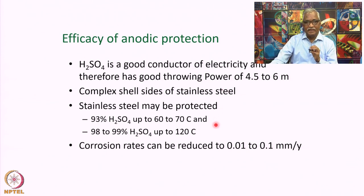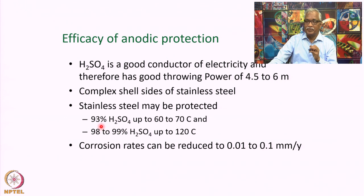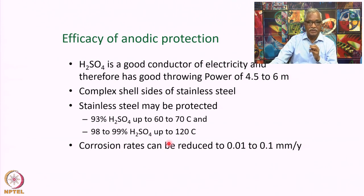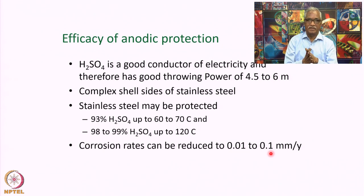Anodic protection is generally applied to 93 percent sulfuric acid and in the range of 98 to 99 percent sulfuric acid over certain temperature ranges, because the corrosion rate can be reduced to 0.01 to 0.1 millimeters per year, whereas it is really higher at these concentrations without protection.